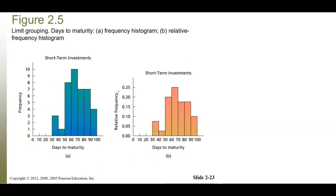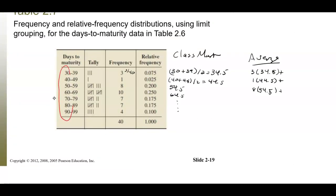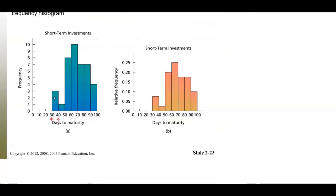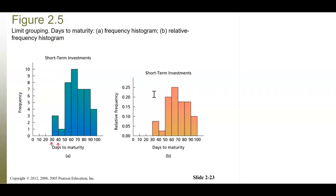For our limit grouping data — days to maturity, which is discrete — we had classes from 30 to 39, 40 to 49, and so on. On the histogram you use only the lower class limit of each class: 30, 40, 50, 60, 70, 90, 100. Again, the first is a frequency histogram and the second is a relative frequency histogram.